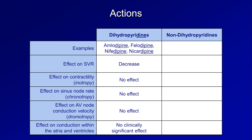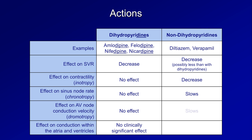When it comes to the antiarrhythmic non-dihydropyridines, there are actually only two to discuss: diltiazem and verapamil. Both of these drugs decrease SVR, decrease contractility, slow the sinus node rate, and slow the AV nodal conduction velocity.